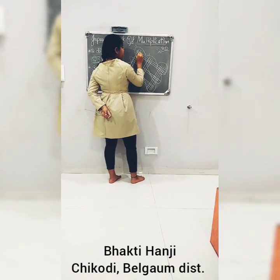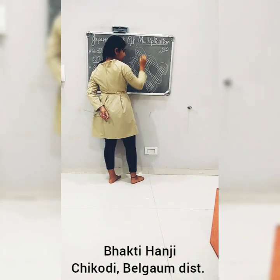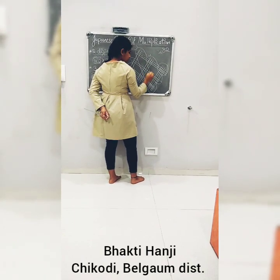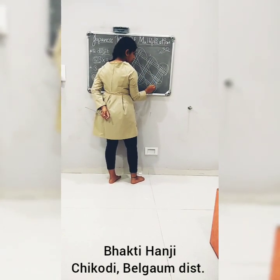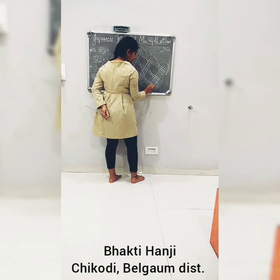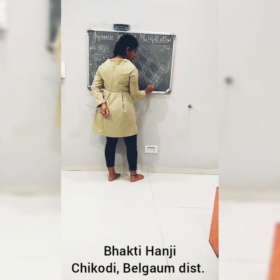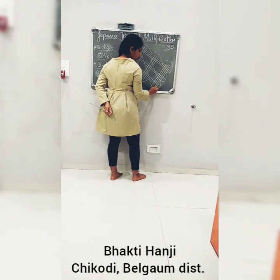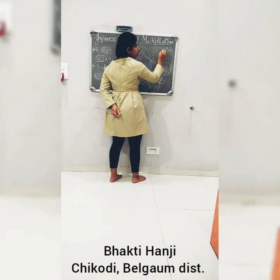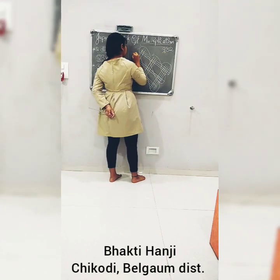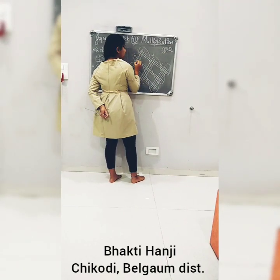Counting the intersecting points for part 3: counting gives us 18, plus the 1 carry makes it 19 — and with the additional carry total is 29. So 9 goes here and 2 goes as carry.